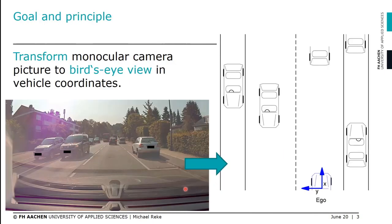The goal is: given a picture from a monocular camera installed in a car, we want to transform the image information into vehicle coordinates. We see other traffic participants like cars and road information like traffic lanes, and we want a bird's-eye view to estimate distances from our ego car to other cars and to the lanes — for example, to determine which lane to follow or which lane to change to. Calculating the bird's-eye view is the main task.